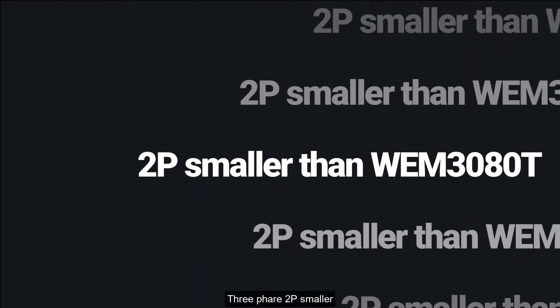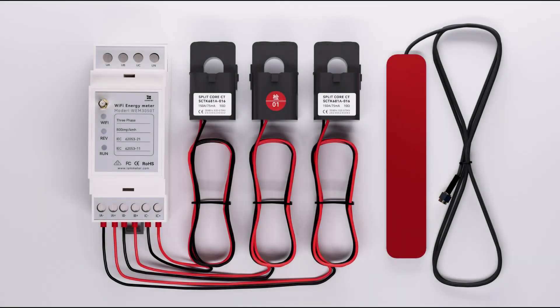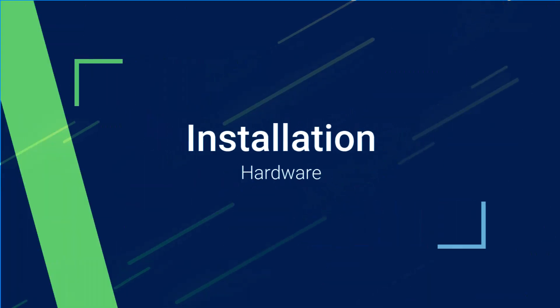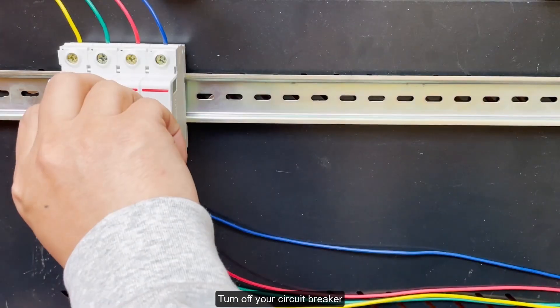WEM 3050T Introduction, 3 phase 2P smaller. Turn off your circuit breaker.